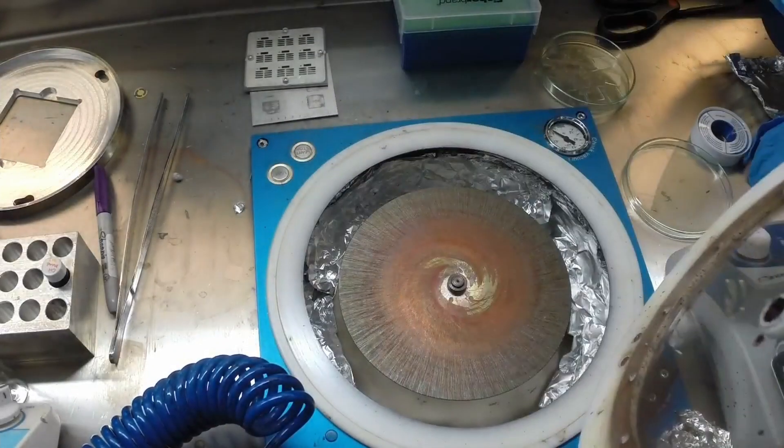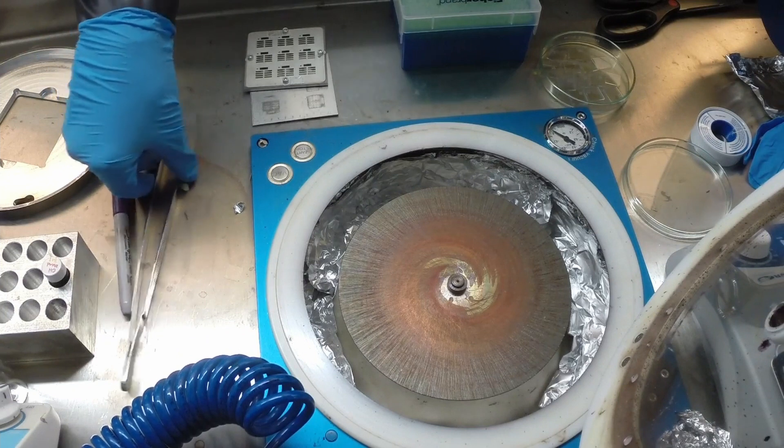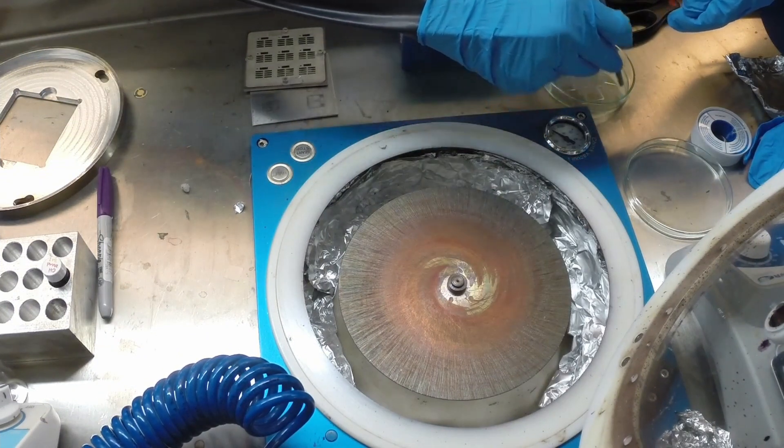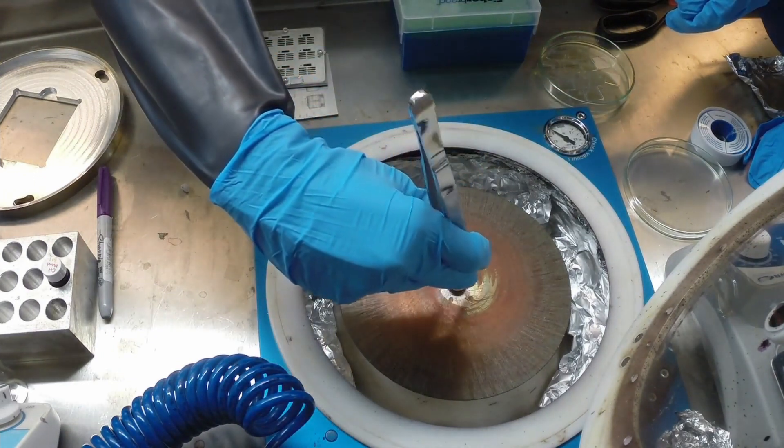To begin spin coating onto glass ITO substrates, we'll open the lid, place a substrate on the chuck, and press the round vac button to turn on the vacuum.